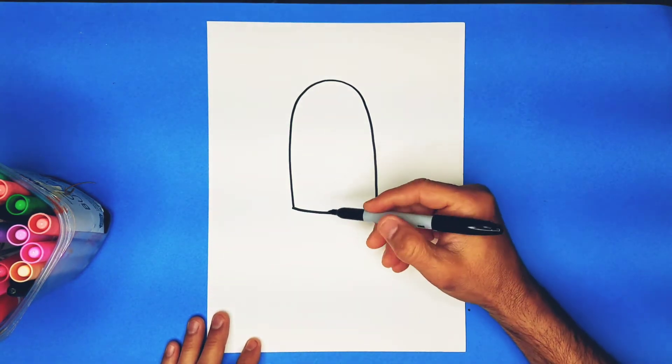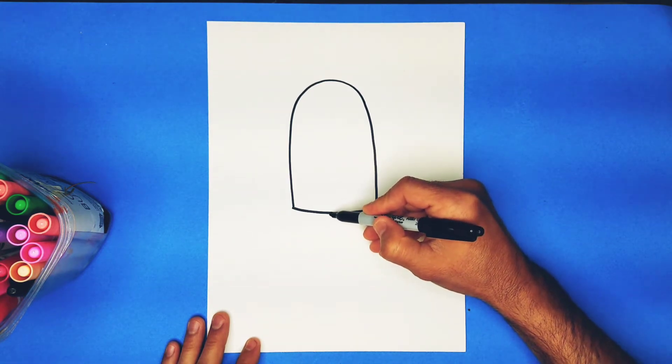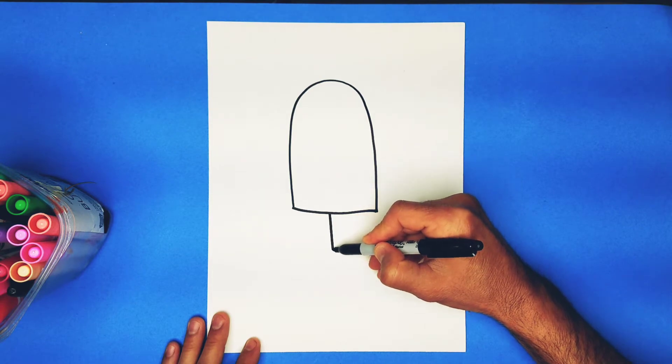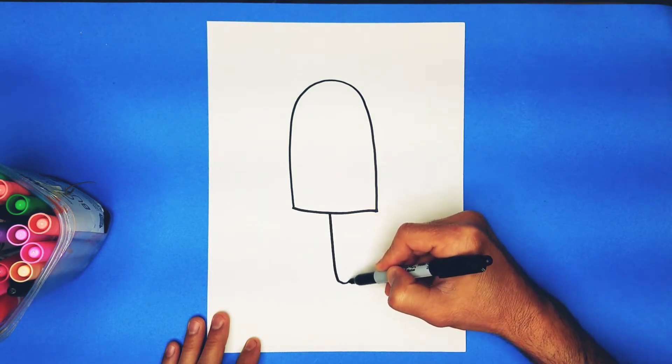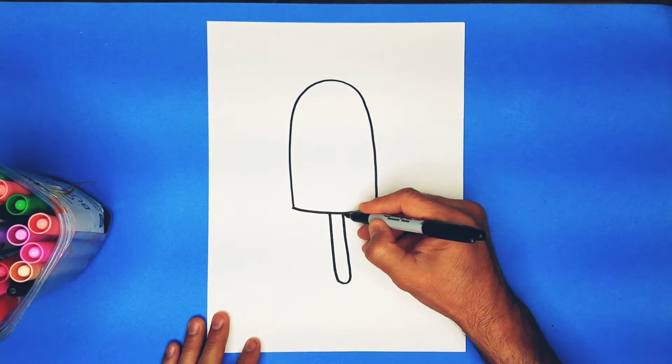Okay, and we're going to put an ice pop stick somewhere a little bit just past center. I'm going to make this edge a little bit thicker and darker.